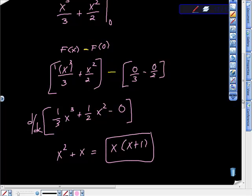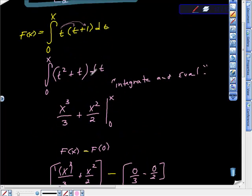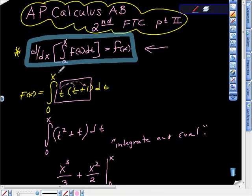X times X plus one. T times T plus one. So ddx of the definite integral from a to X of f of t dt is the same as f of x, and we just proved it.